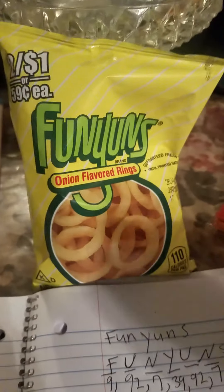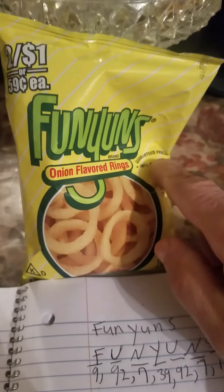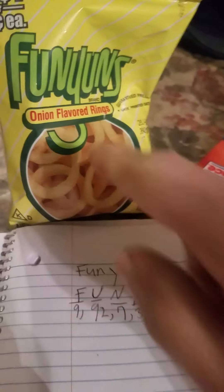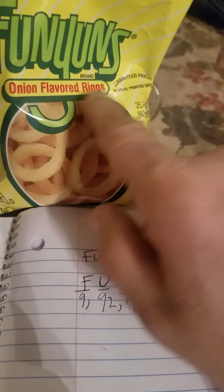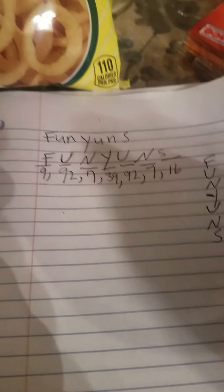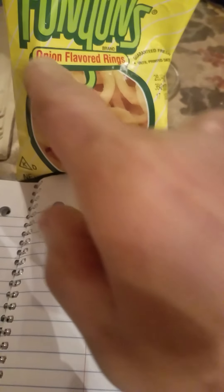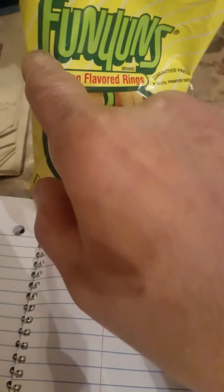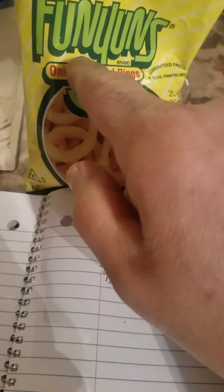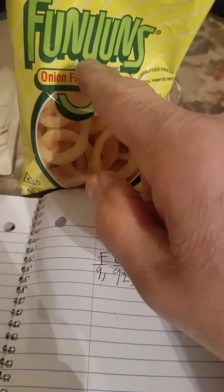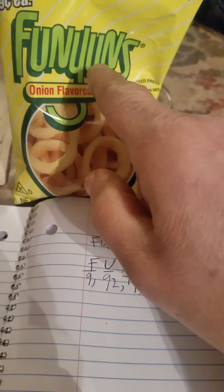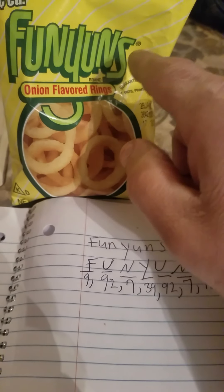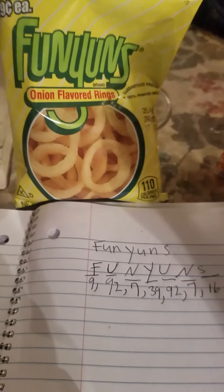So next time you see Funyuns — which I love — here you are right here: Fluorine, Uranium, Nitrogen, Yttrium, Uranium, Nitrogen, and Sulfur. There they are right there.